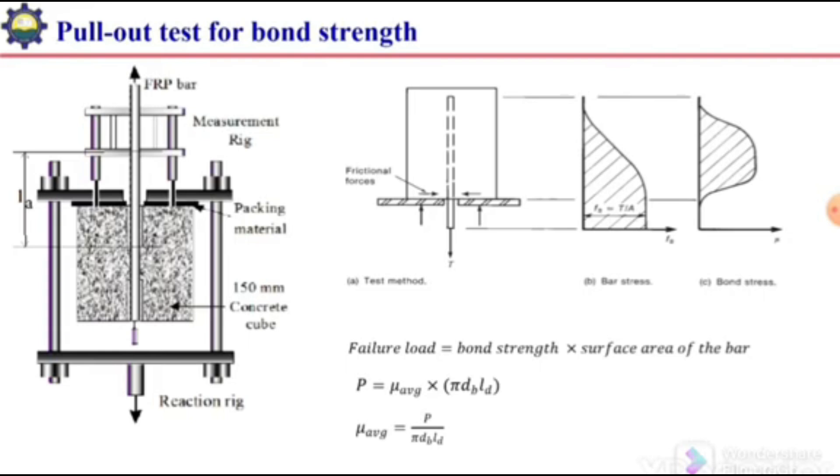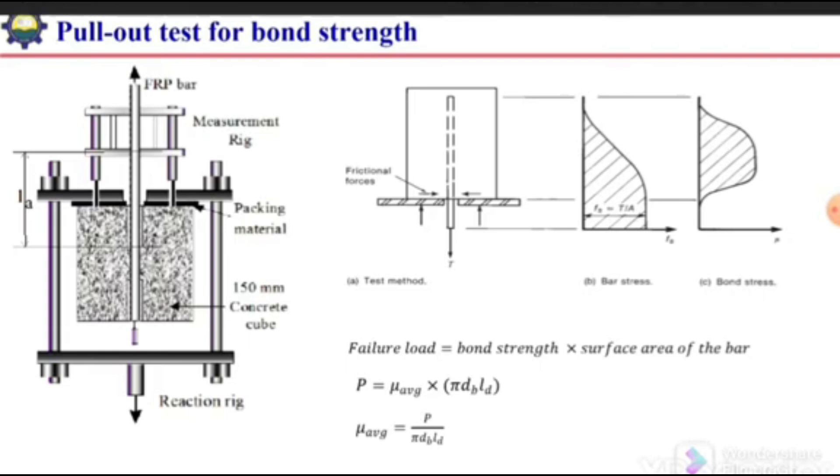In pull-out test, we take a concrete cube or cylinder and embed the reinforcement inside it up to a required length. Then we take that specimen into the machine in such a way that it is resting against a plate which has a hole at its center, so that the bar can pass through this hole and the cylinder is resting over here.